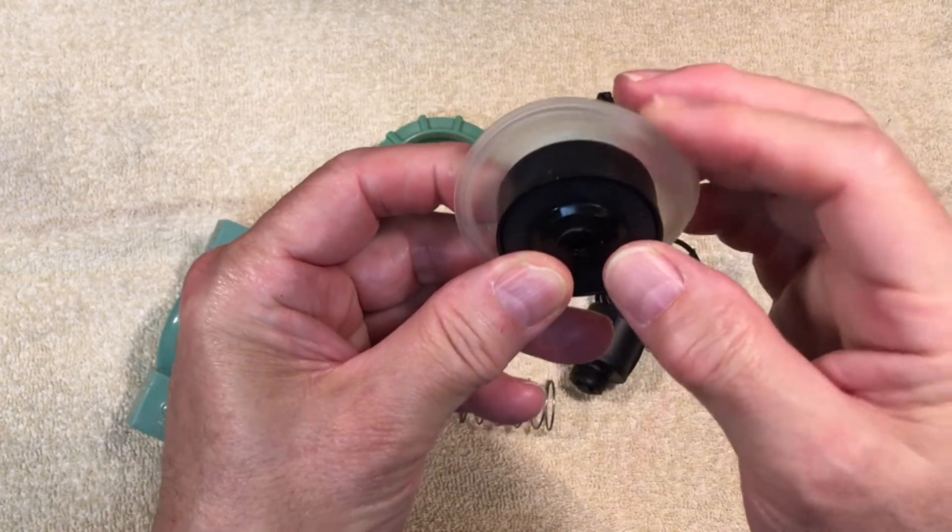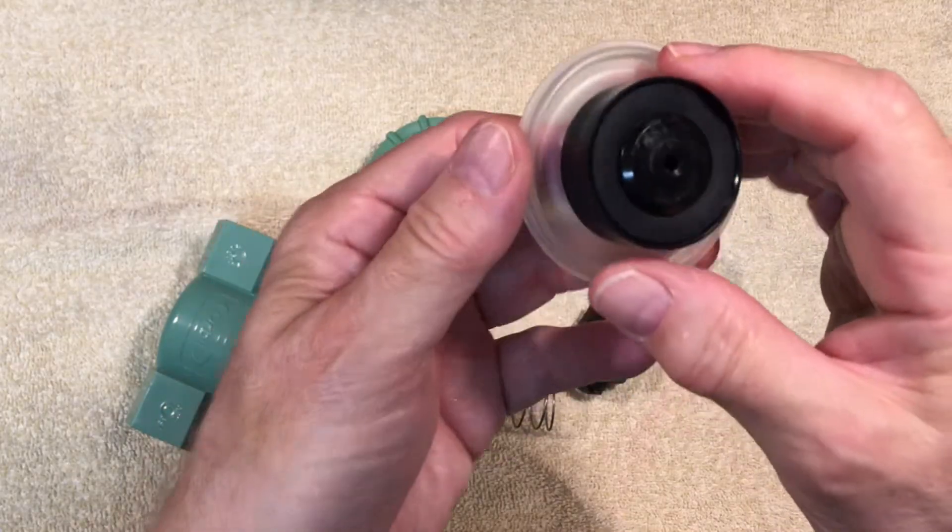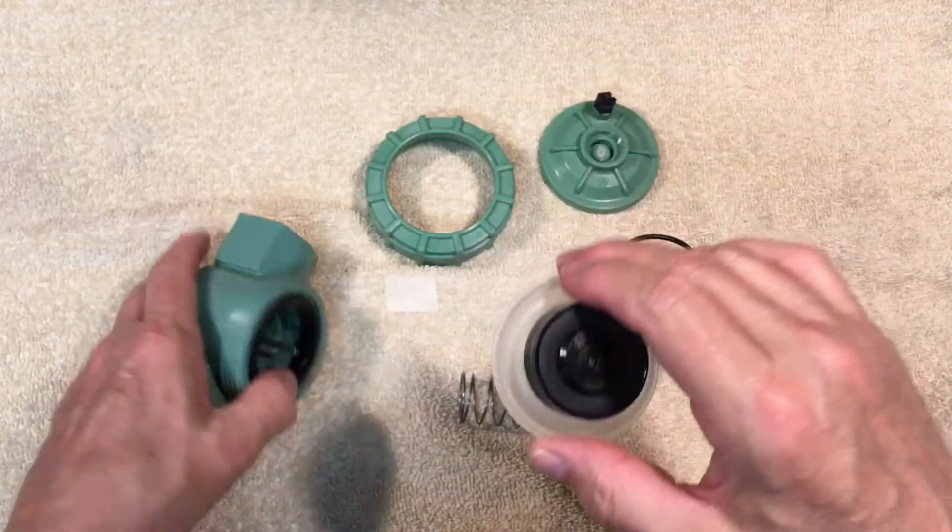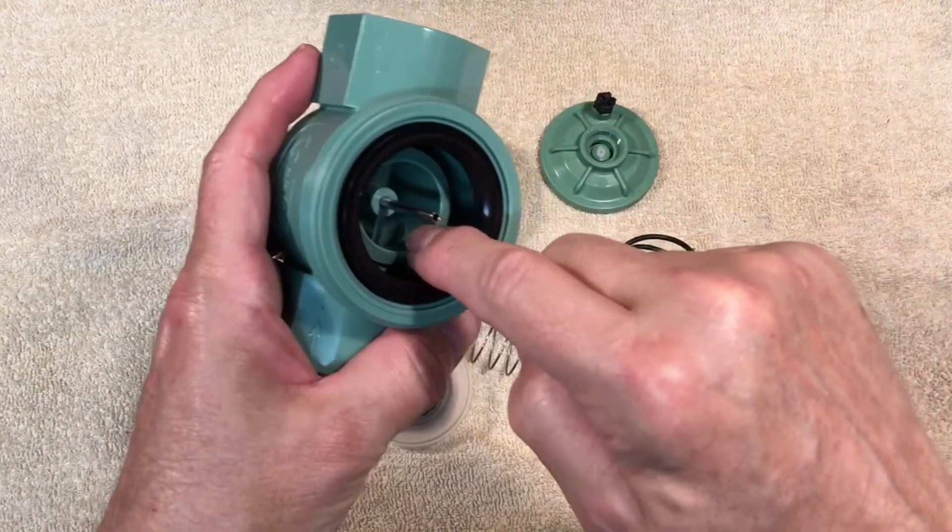The outside of the diaphragm is a soft, flexible rubber. There's a soft rubber ring on the bottom of the hard part that seats on this little reservoir down in the valve.